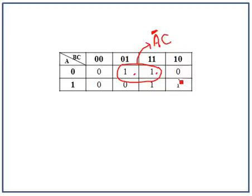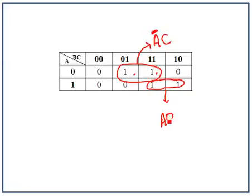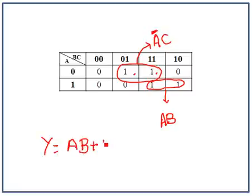Now let's consider these two cells. What's common there? A is 1 and B is 1. So the Boolean expression here, output Y, is A·B or not-A·C.